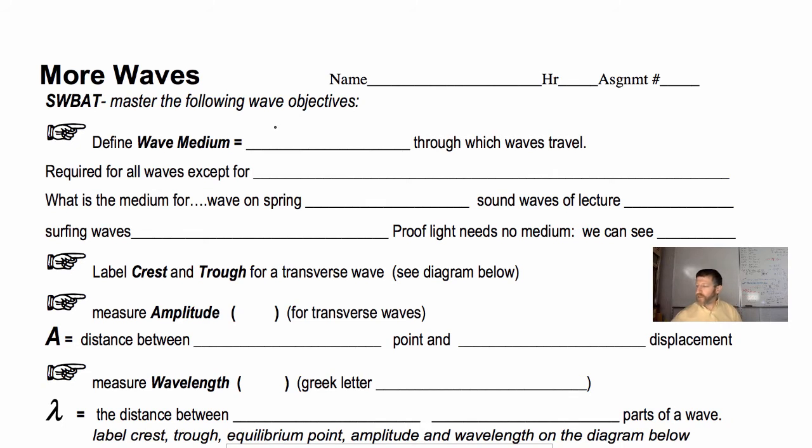Wave medium is simply the substance through which waves travel. This is required for all kinds of waves except for there's one type of wave that actually doesn't even need a medium. Anybody know what that is?